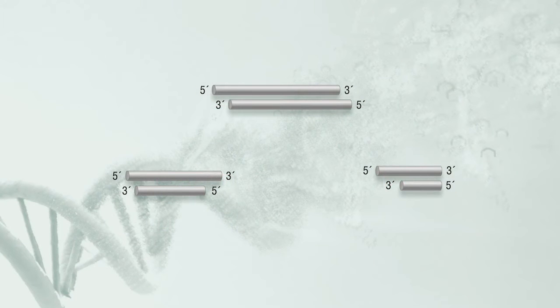The first steps in library construction are end repair and dA tailing. In this step, the input DNA is blunted and phosphorylated and an A is added to the 3' end of each fragment. In the Ultra 2 workflow, these two steps are combined.